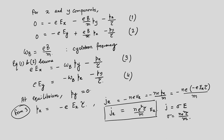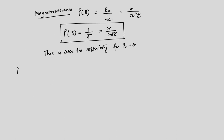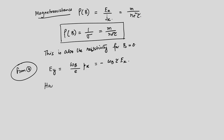Now let us use equation 4 (the y-component). From equation 4, E_y = (ω_B/e)·p_x = −ω_B τ E_x. So E_y = −ω_B τ E_x. The Hall coefficient R_H is defined as E_y/(J_x × B), which equals (ω_B/e)·p_x divided by (−neP_x/m)·B.